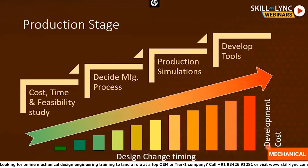The production stage is controlled by cost, time, and feasibility, which have to be confirmed. Because every design and every imagination cannot be made into a product — there are many limitations which have to be considered before designing and producing a product.